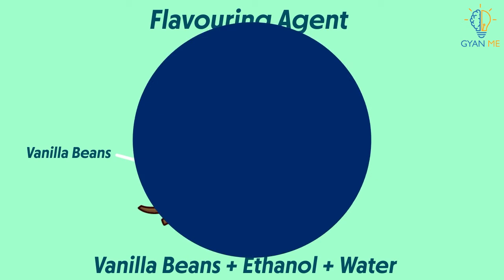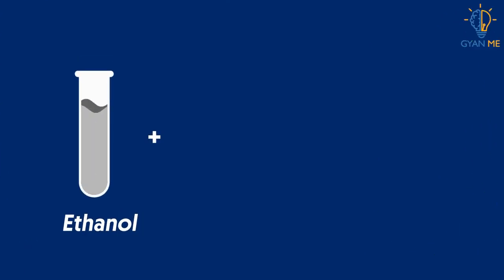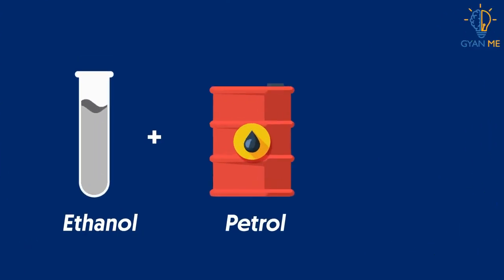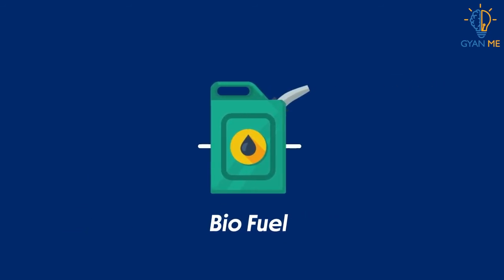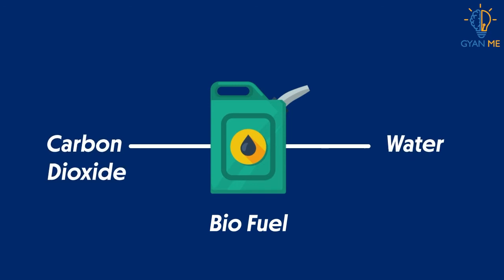In some countries, ethanol is mixed with petrol — a mixture known as biofuel. It is a clean fuel as it produces only carbon dioxide and water after complete combustion in sufficient supply of oxygen. It does not produce any toxic gases.